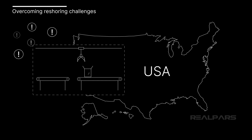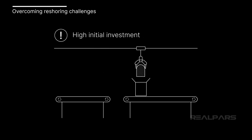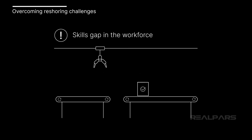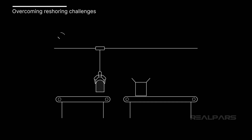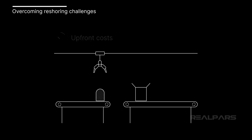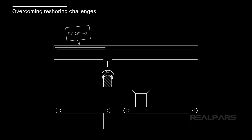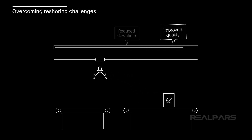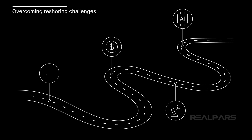In addition to its many benefits, reshoring manufacturing will come with many challenges. Among those are a high initial investment in technology and overcoming the skills gap in the workforce. Companies need to acknowledge the upfront costs of reshoring and providing the level of automation that will provide long-term benefits like efficiency, reduced downtime, and improved quality. A detailed and realistic digital transformation strategy can provide a solid roadmap for the adoption of the appropriate level of automation and determine a capital strategy needed to make this transformation possible.